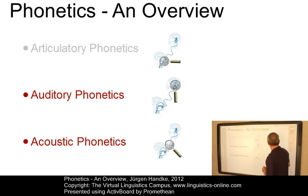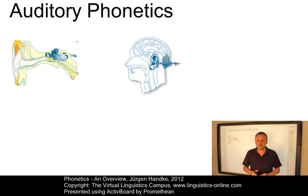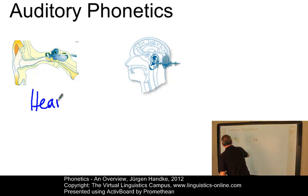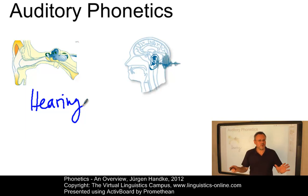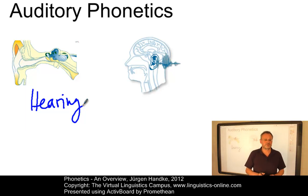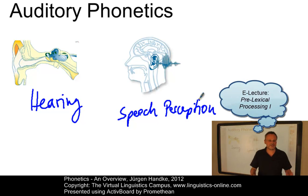Auditory phonetics investigates the processes underlying human speech perception. The starting point for an auditory analysis of speech is the study of the human hearing system — that is, the anatomy and physiology of the ear and the brain. Since the hearing system cannot react to all features present in a sound wave, it is essential to determine what we perceive and how we perceive it. This enormously complex field is referred to as speech perception. For more, consult our e-lecture Pre-Lexical Processing 1.